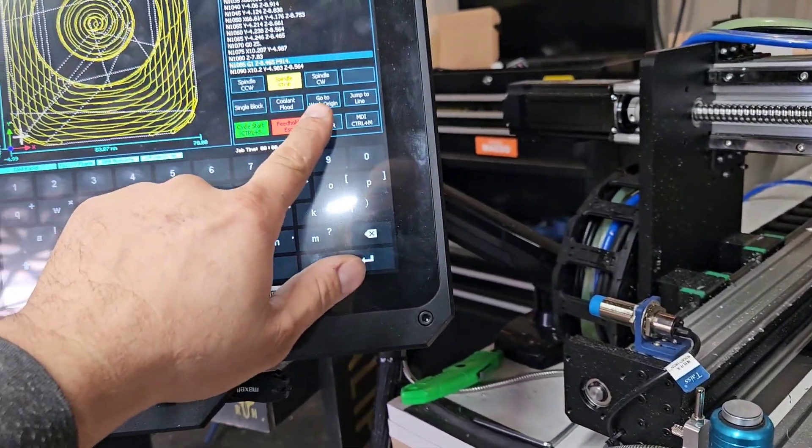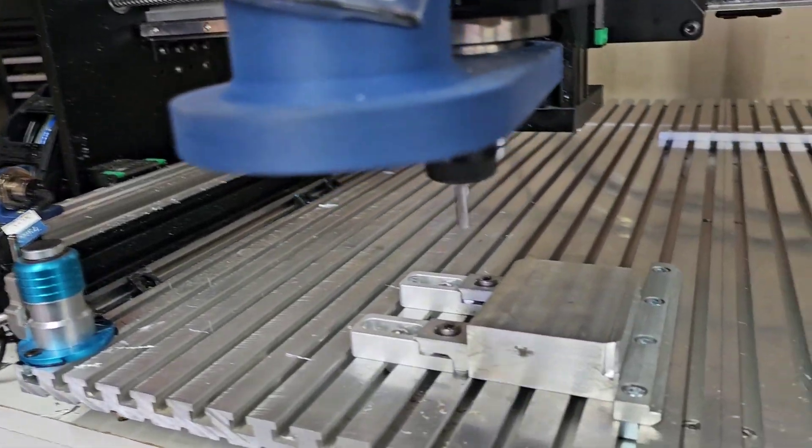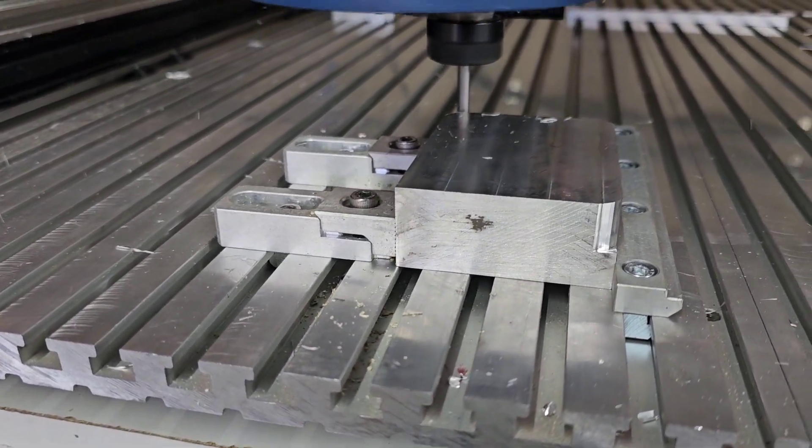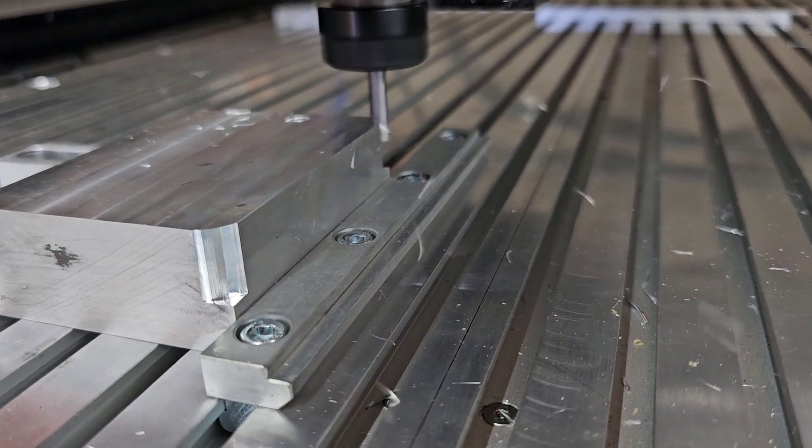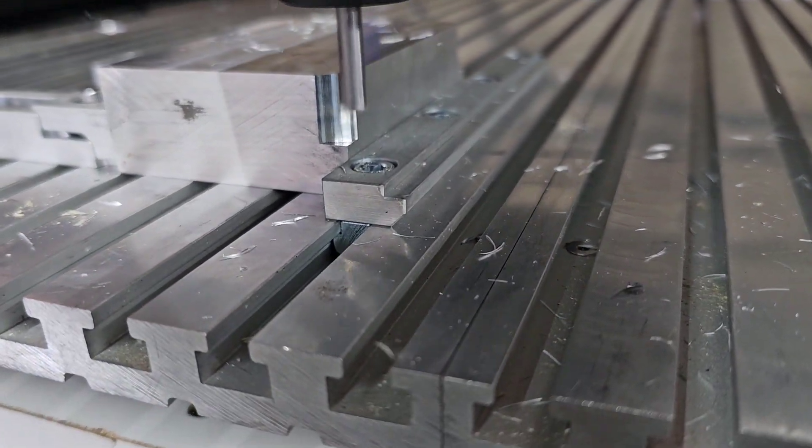So we're going to go ahead and go on the Masso, click rewind, go to cycle start. I don't have the vacuum attachment on here because I want to see how that works. Oh yeah, now we're perfect. I want to be able to see the bit do its work. So I'm making a mess for you guys.